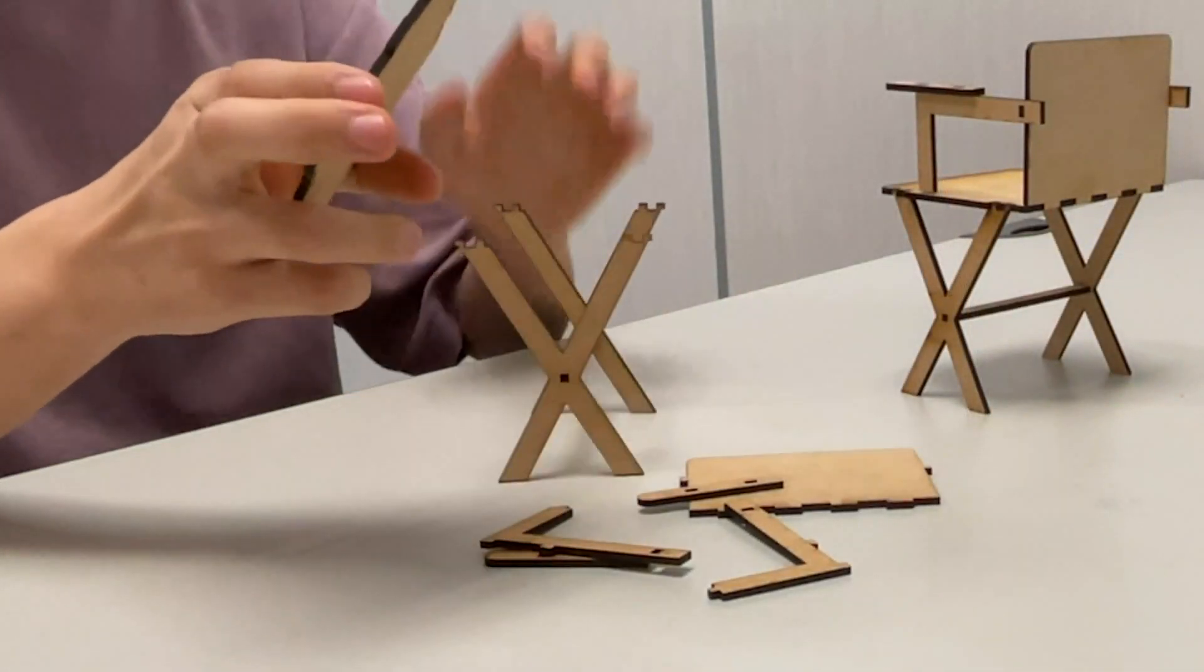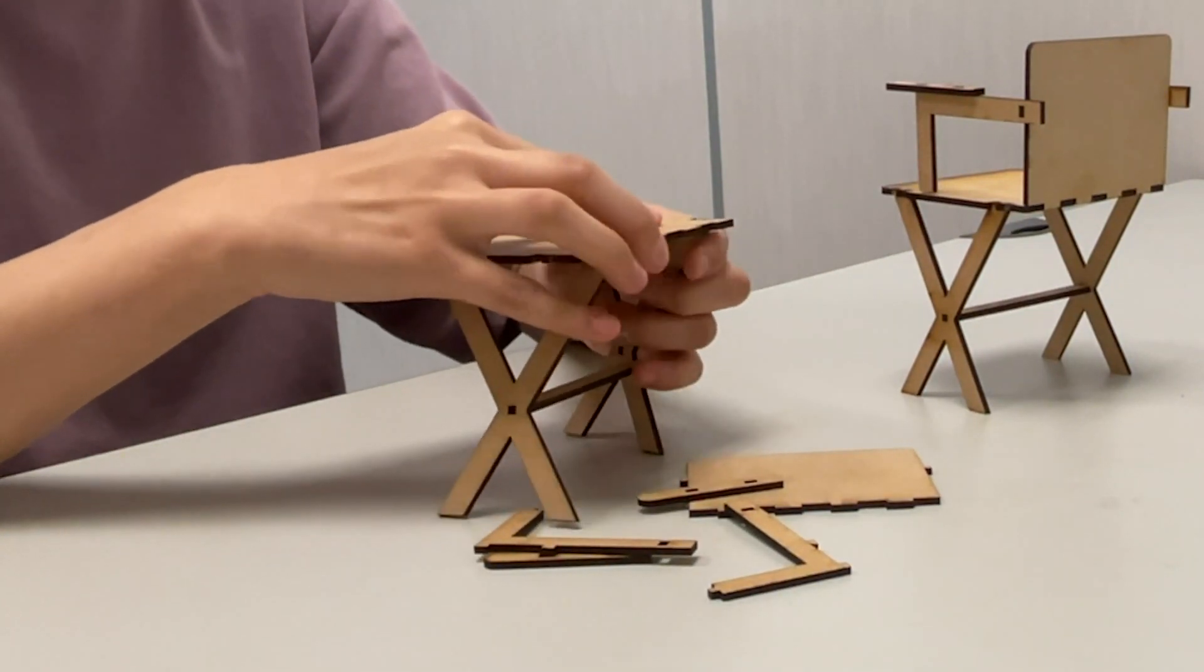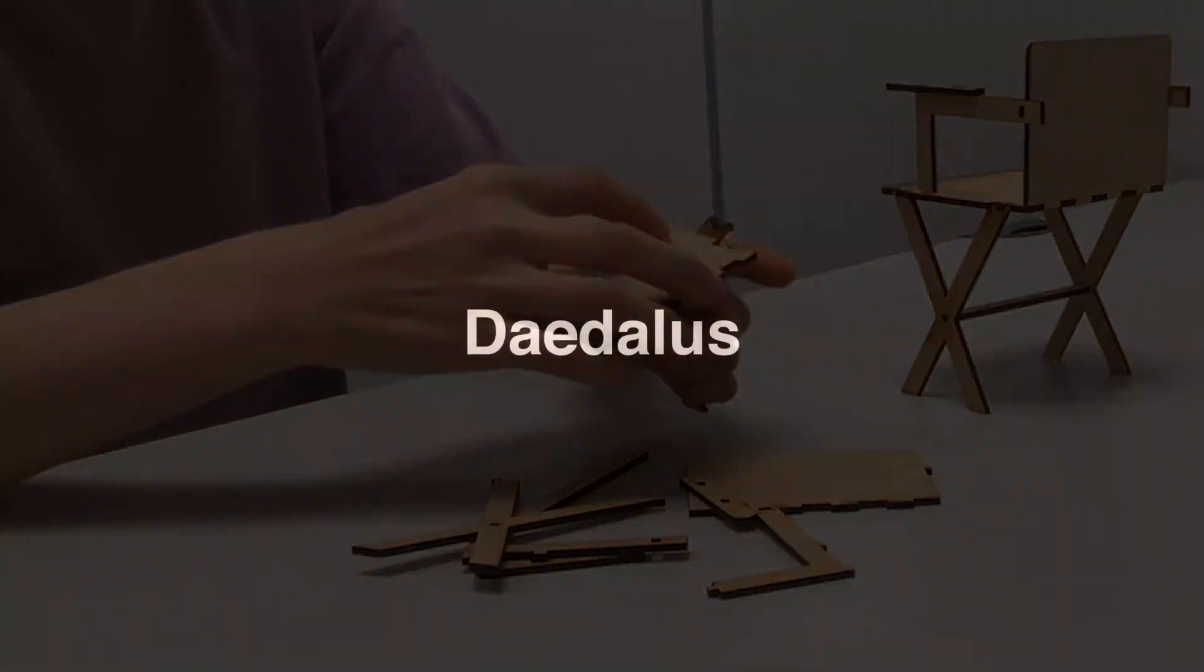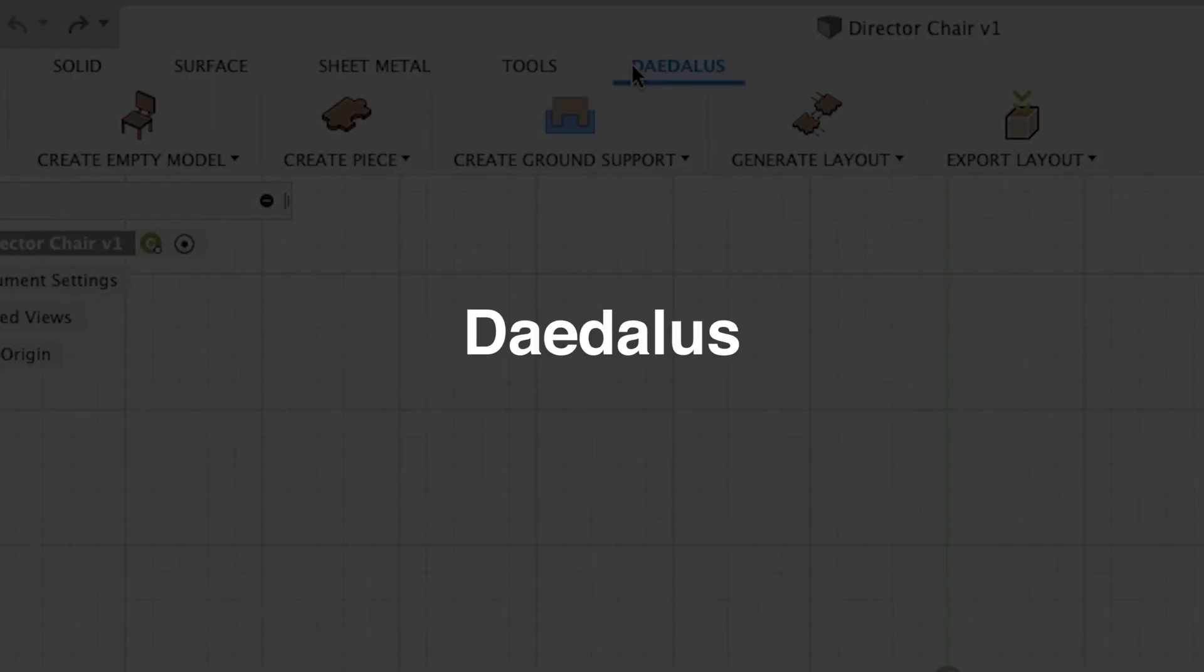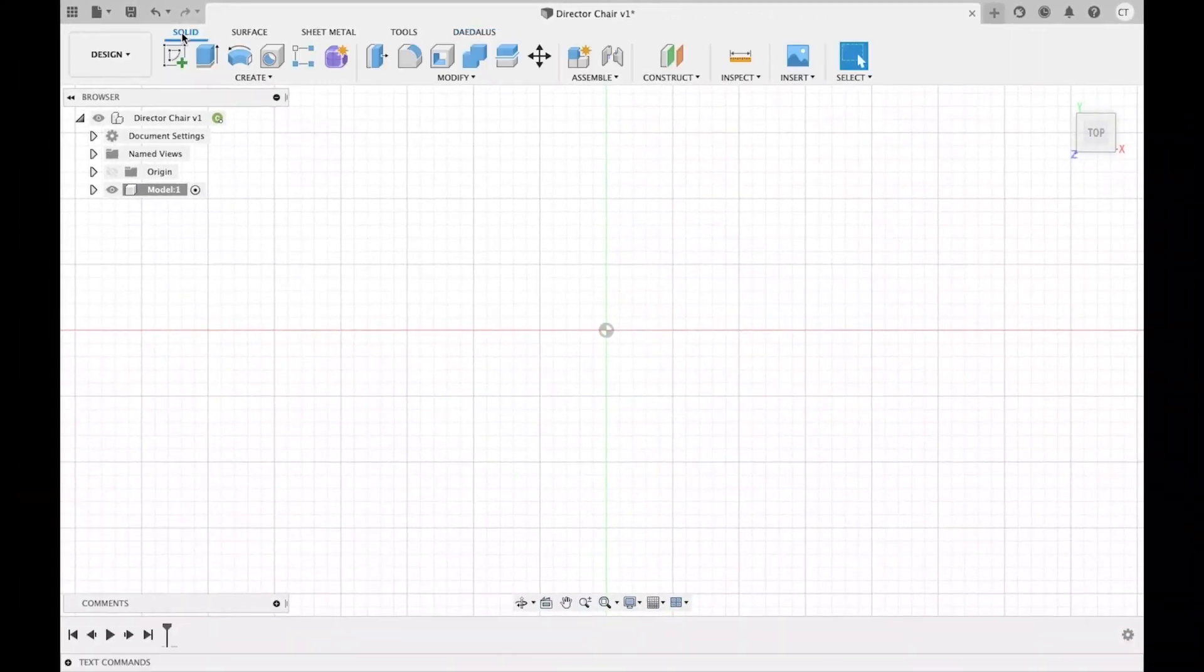Without vision, it was also difficult to identify and stabilize parts of mid-assembled models during the assembly task. Based on these findings, we developed Daedalus, a design tool that can generate accessible tactile aids to be laser cut along with Fusion 360 assemblies.